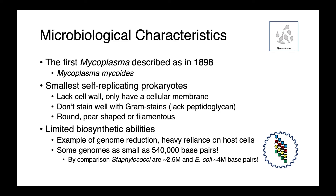Some mycoplasma have undergone a process of genome reduction, and there are examples where we have genomes as small as 540,000 base pairs, which is super tiny. For comparison, staphylococci have around 2 to 2.5 million base pairs, and E. coli have 4 megabase pair genomes.